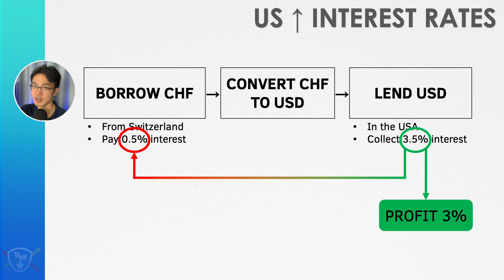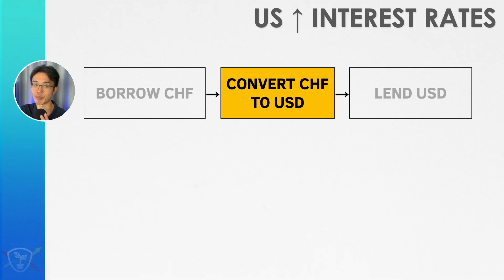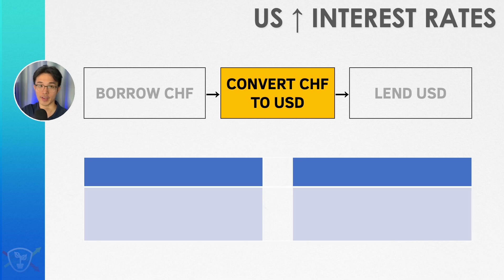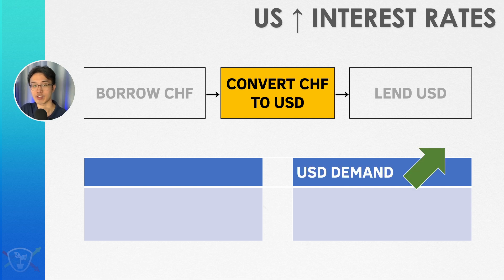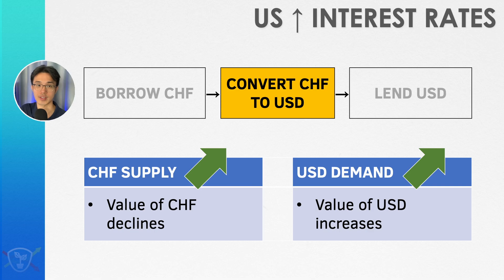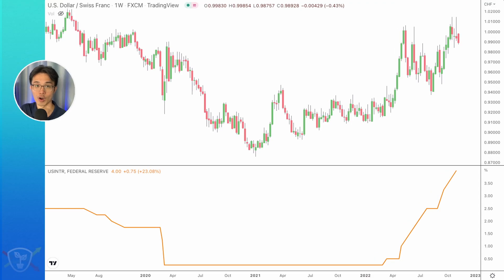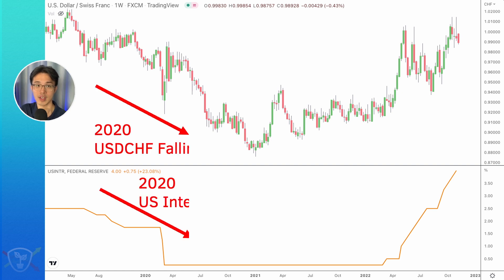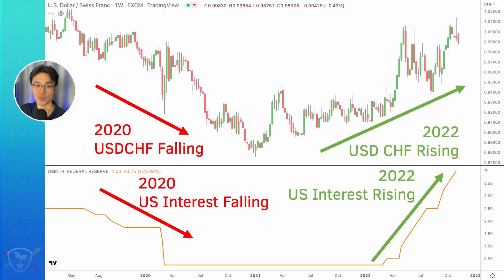The key actually lies in the step in between. The borrowed Swiss francs need to be converted into US dollars. So when everybody is trying to carry out this transaction, there's going to be a surge in demand for US dollars, and at the same time a flood of supply for Swiss francs. The outcome is that the US dollar is going to increase in value because of the increased demand, and the Swiss franc is going to fall in value because of the increased supply. So we see here the net effect of what happens when interest rates change — the currency with higher interest rates will tend to increase in value, and the currency with lower interest rates will tend to fall in value.